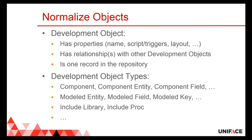We identified the development object, and every single development object would be stored in a single occurrence in the repository. Types of development objects are component, component entity, component field, component label, modeled entity, modeled field, modeled key, modeled relationship, include library, etc.